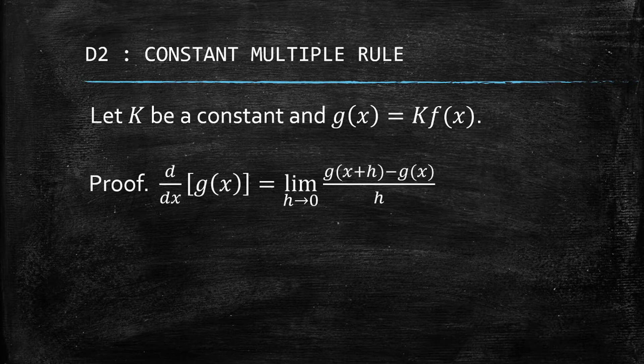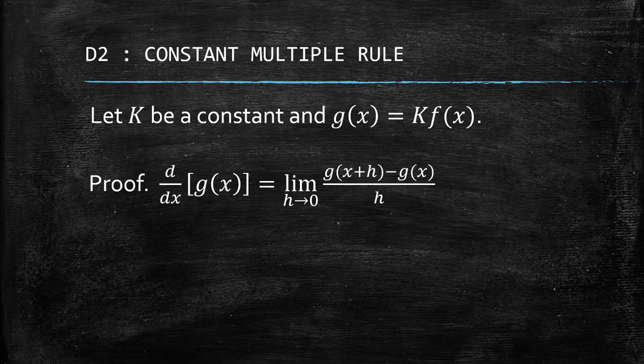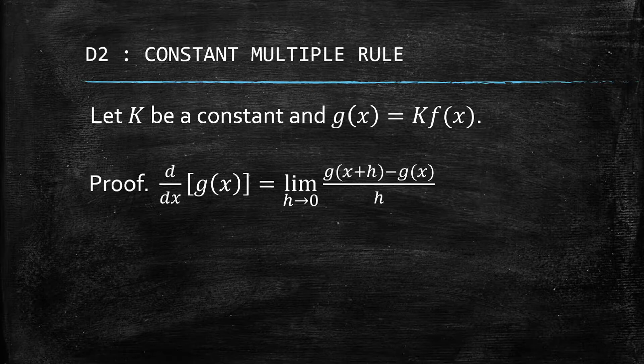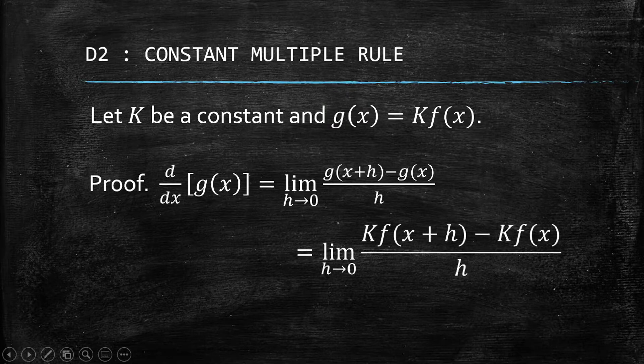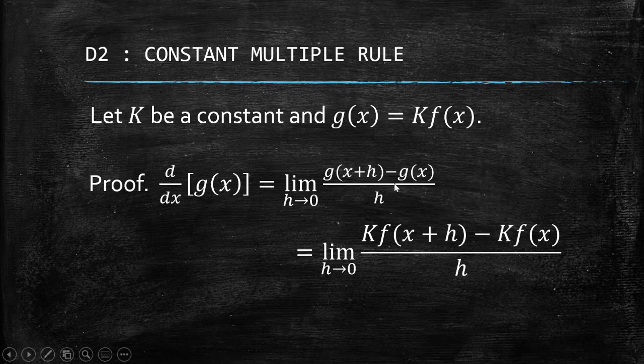Proof: we're going to get the derivative of g(x) and use the definition of limits. But instead of f we have g because our function is g, so we have to substitute the value of g afterwards. What's the value of g(x+h)?